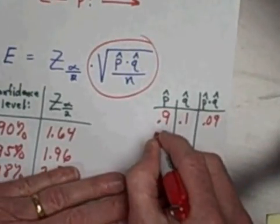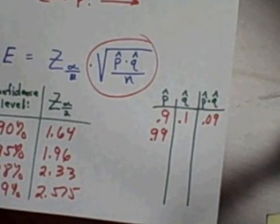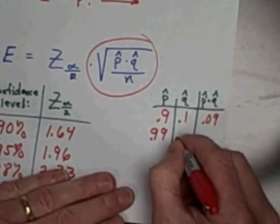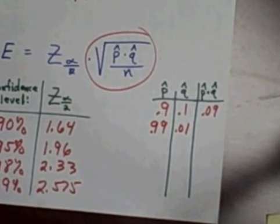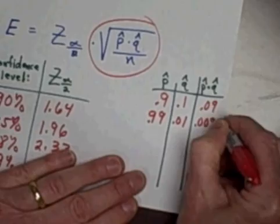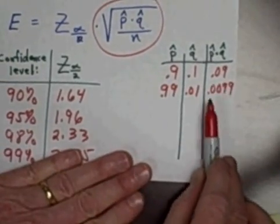Let's go one step further. Let's take it even more stringent. Let's say 99% of all the people in my sample are in favor of one thing. That means only 1% would not be in favor. And when I multiply that out, I get 0.0099. Okay, so that's about as small as the number I'm going to get.